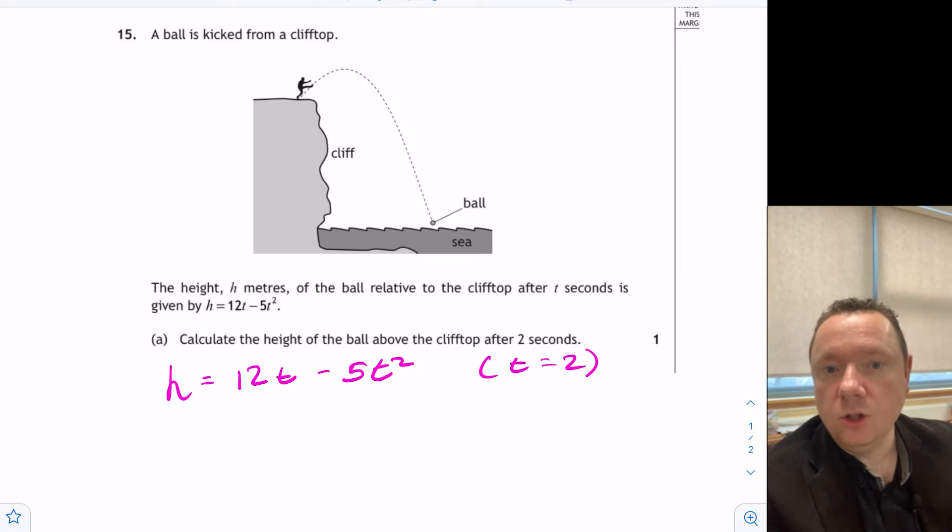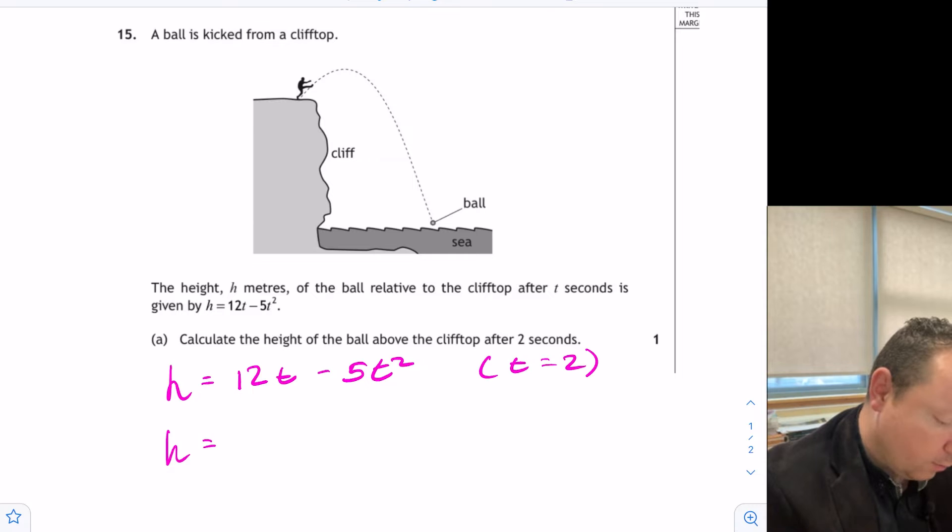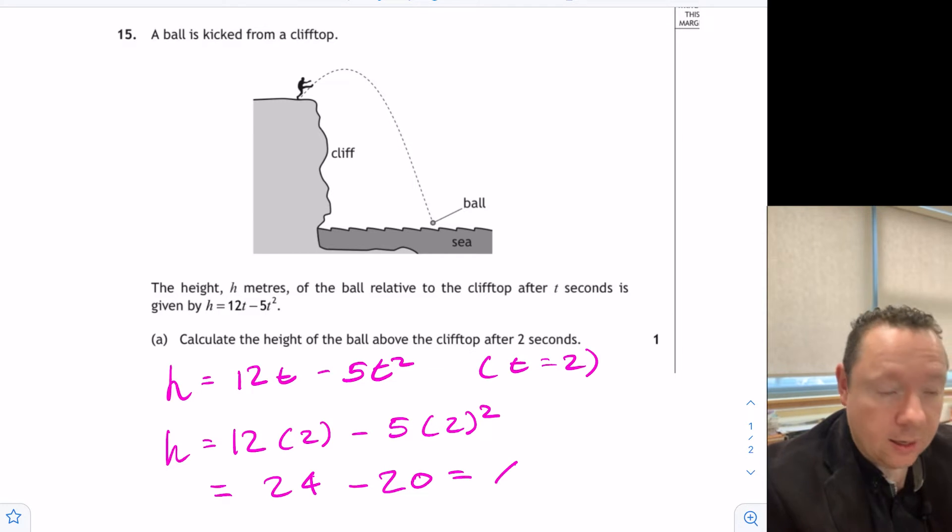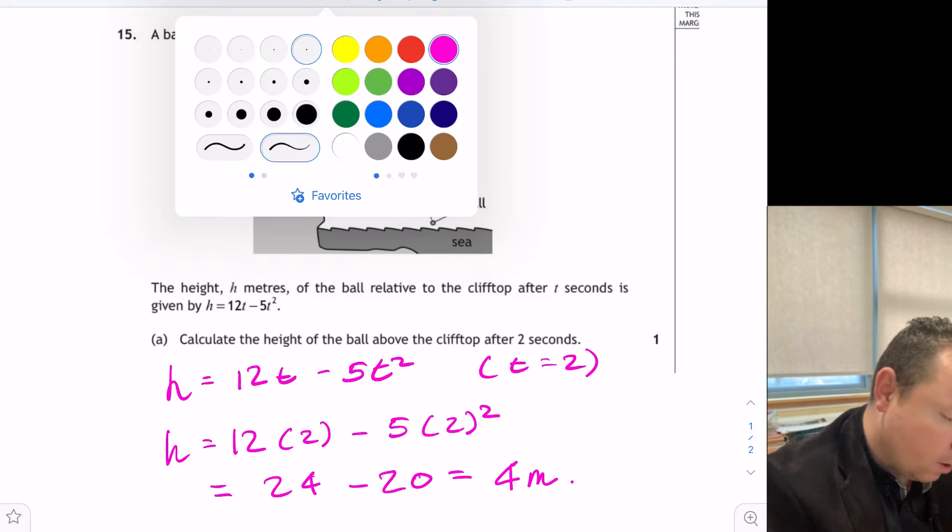So the height would be 12 × 2 - 5 × 2². That's 24 minus 4 fives is 20, so that gives me an answer of 4 meters for one mark there.